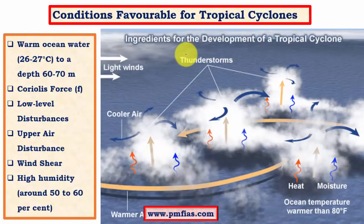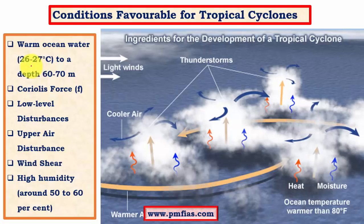Now let us look at the most important concept — the favorable conditions for tropical cyclones. Tropical cyclones don't occur in every tropical region; they occur in specific regions like the Bay of Bengal, the Arabian Sea, the South China Sea, the western Pacific near the tropics, and the Gulf of Mexico. The first and most important condition is the existence of a warm layer of water with a temperature of about 26.6 degrees Celsius.